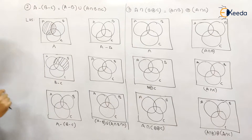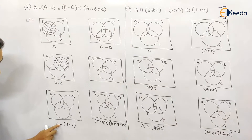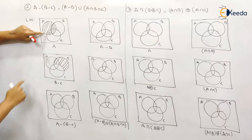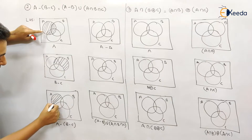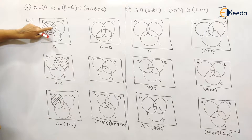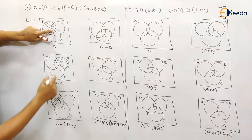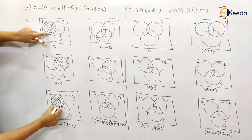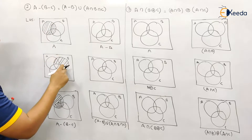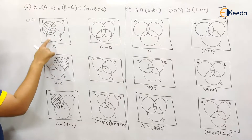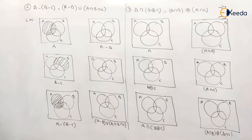That means from this particular shade I am going to subtract this shade. Whatever we will be left with will belong to A — this is for sure. From A we are subtracting this particular part. This part C will be subtracted, that means this region will not come into the solution. This part is not subtracted, so this part will come. This part will also come. So this is your A minus (B minus C).